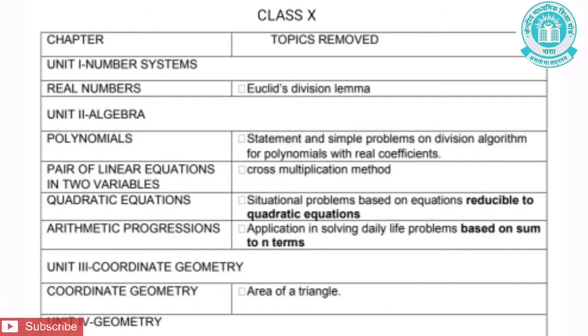Under Unit 3, that is Coordinate Geometry, the chapter included under this unit is Coordinate Geometry. The topic removed from this chapter is Area of a Triangle.